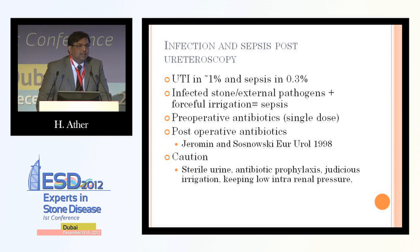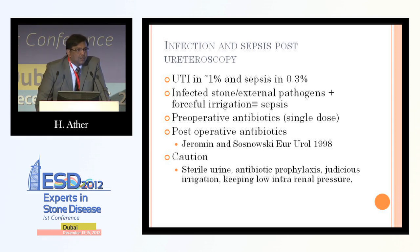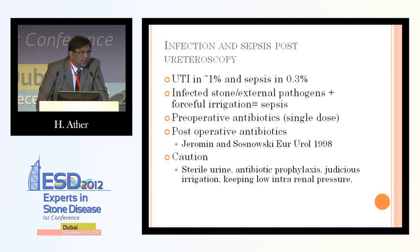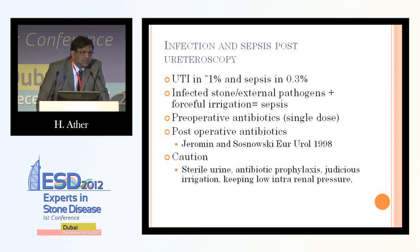Palae has brilliantly discussed urosepsis, which can result from an infective stone or external pathogens introduced during ureteroscopy, plus forceful irrigation. Pyelolymphatic backflow can convert a simple urinary tract infection into sepsis — a Clavien grade 2 complication. Use of preoperative antibiotics is recommended in most cases, postoperative antibiotics in complicated cases should always be given, and caution for anyone starting ureteroscopy: ensure your urine is sterile before the procedure, use antibiotic prophylaxis, judicious irrigation, and keep intrarenal pressure as low as possible.